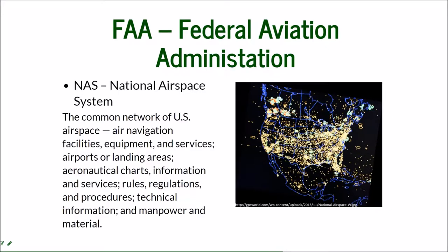The National Airspace System is the network that includes all the air navigation facilities, equipment, and services, landing carriers, charts, and information services. It also makes rules, regulations, and procedures, and provides technical information, manpower, and material. Everything related to the airspace over the United States is part of the National Airspace System.